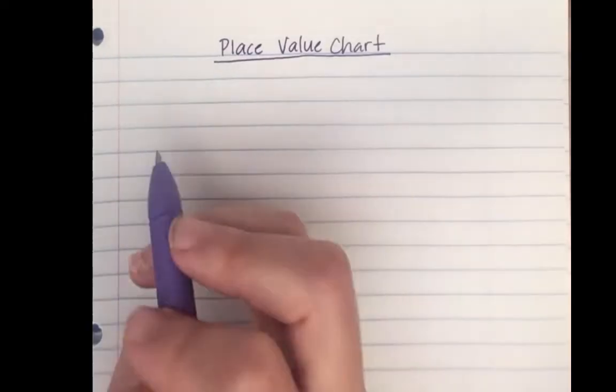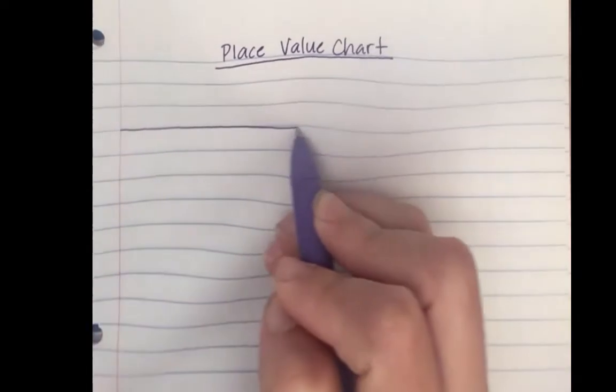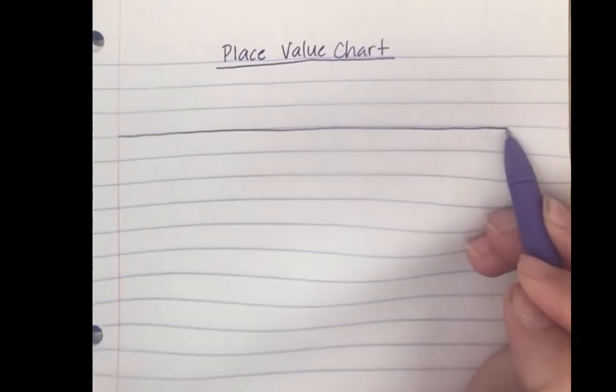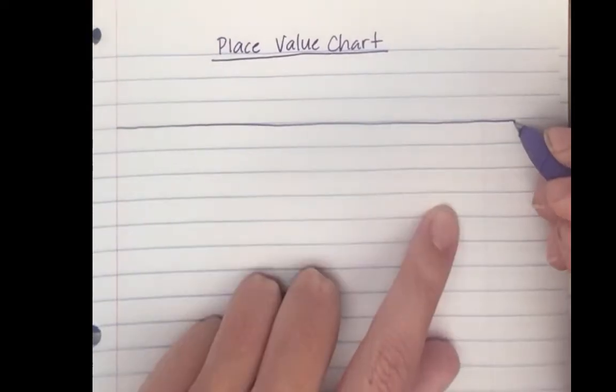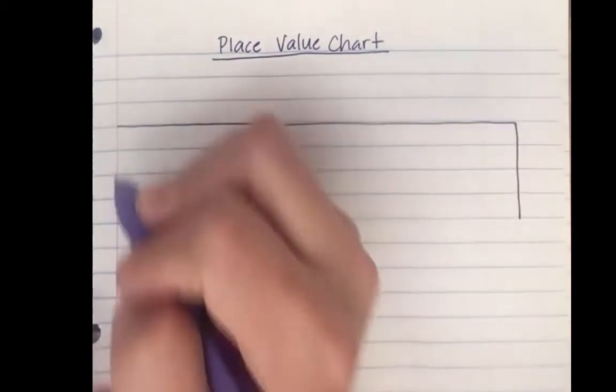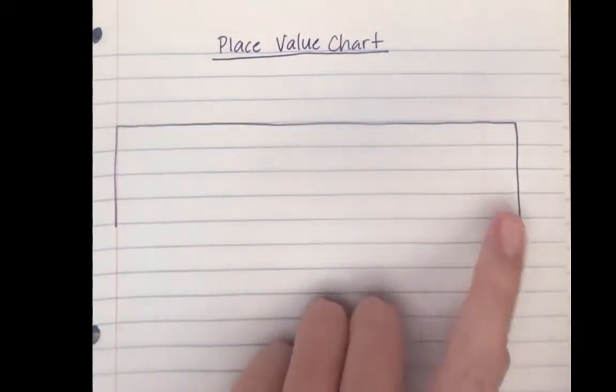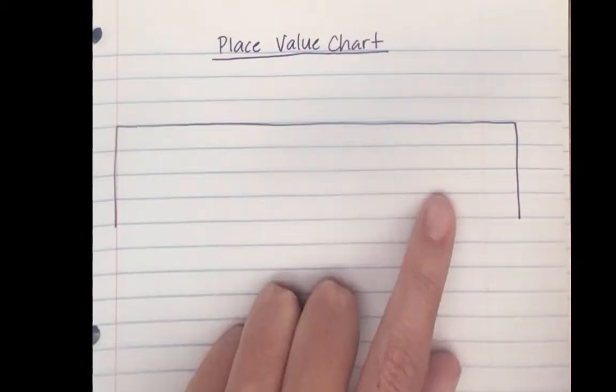We're going to draw a line across our paper. I'm going to draw a line down right here. I want you to watch how many sections I'm going to divide this into.